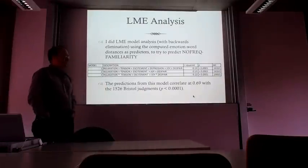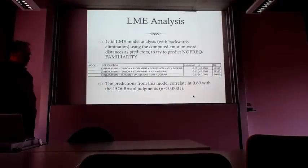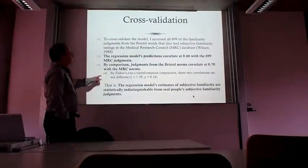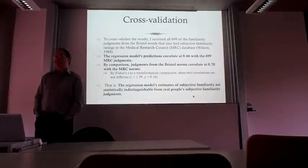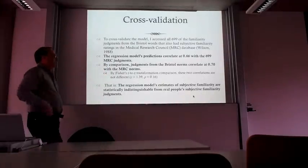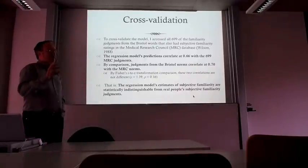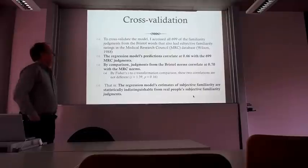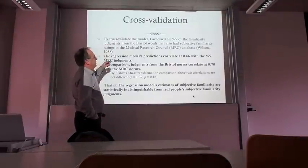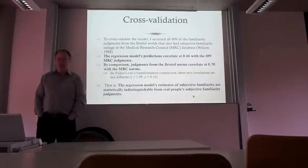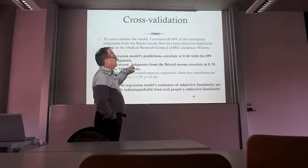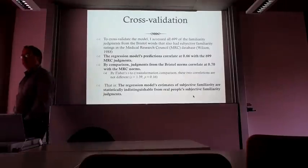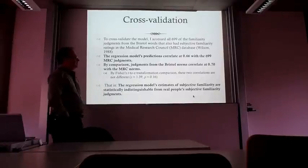The best model had an interaction between relaxation and tension, an interaction between joy and despair, and excitement—depression dropped out, probably because it's strongly associated with despair. The predictions from this model correlated 0.69 with the norm judgments for 1,526 data points. Using human familiarity judgments to predict human familiarity judgments correlates to only 0.70—not much higher, meaning my regression model's estimates of subjective familiarity were statistically indistinguishable from real people's judgments. Predicting a different group's familiarity judgments gave a correlation of 0.66, not significantly different.